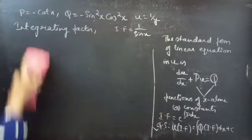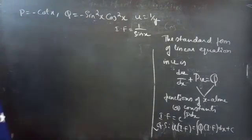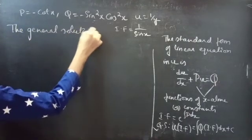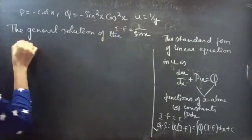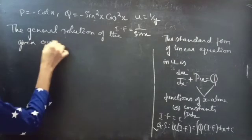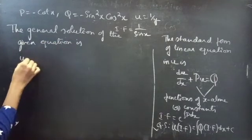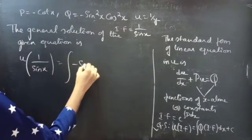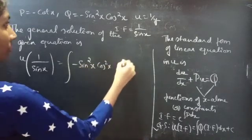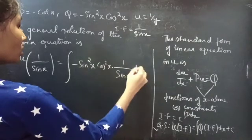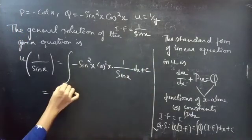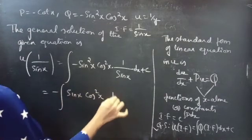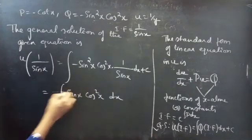Now we find the general solution. The general solution of the given equation is: u·(integrating factor) equals ∫q·(integrating factor) dx, which equals ∫(−sin²(x)·cos²(x))·(1/sin x) dx. Simplifying, sin(x) cancels and we get ∫−sin(x)·cos²(x) dx.